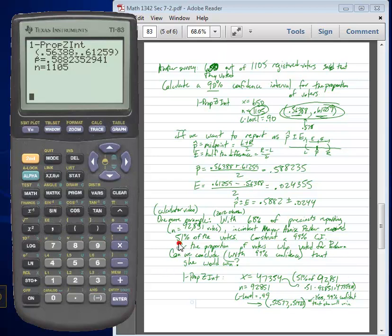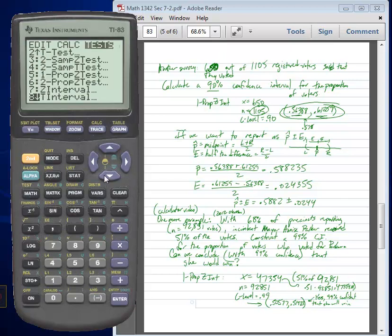We want to construct a 99% confidence interval for the proportion of voters who voted for Annise Parker for this percentage of voters. So 51% of our sample actually voted for Annise Parker. What we want to know is what's a confidence interval for the actual proportion of voters who will vote for Annise Parker out of the entire population of voters. So then we'll see if we can conclude from that with this 99% confidence that she would win the election. So again, we'll go to STAT, over to TESTS, 1-Prop Z Int.